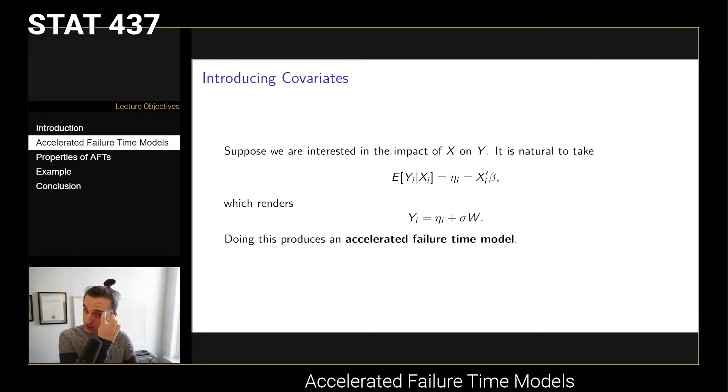If we were interested in introducing covariates, think about what we do with linear regression. Typically, we say that the expected value of the mean is given by this linear predictor, xi transpose beta, or written as eta. If we did this in the case where Y is a location scale family, we're replacing the mean of Y, which is that mu term, with this linear predictor. This is the common regression setup that we're used to seeing.